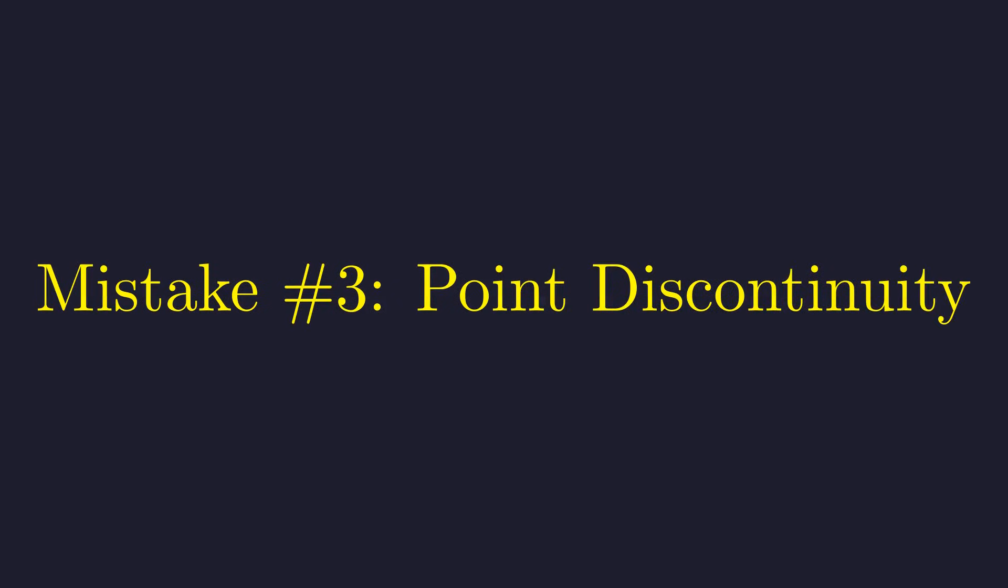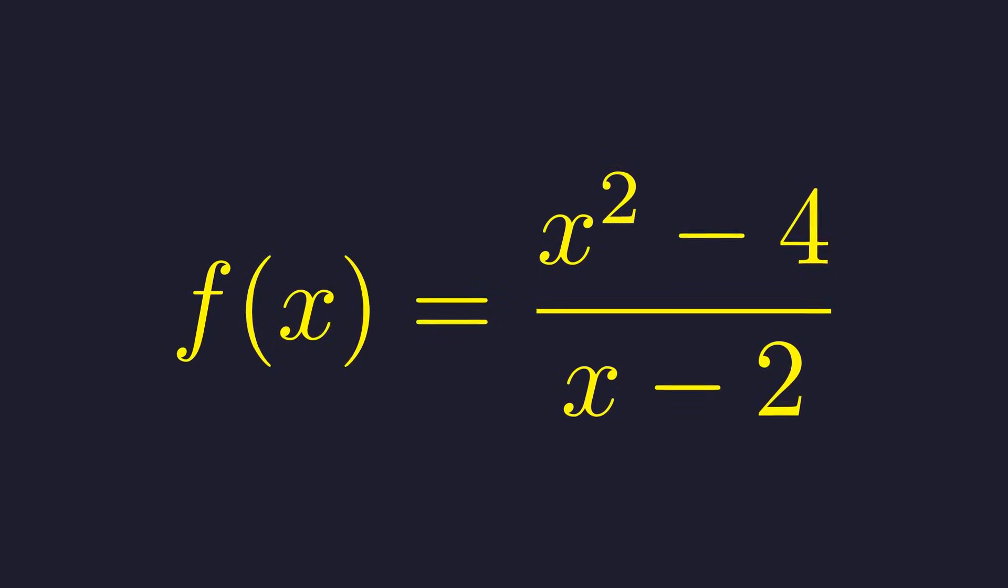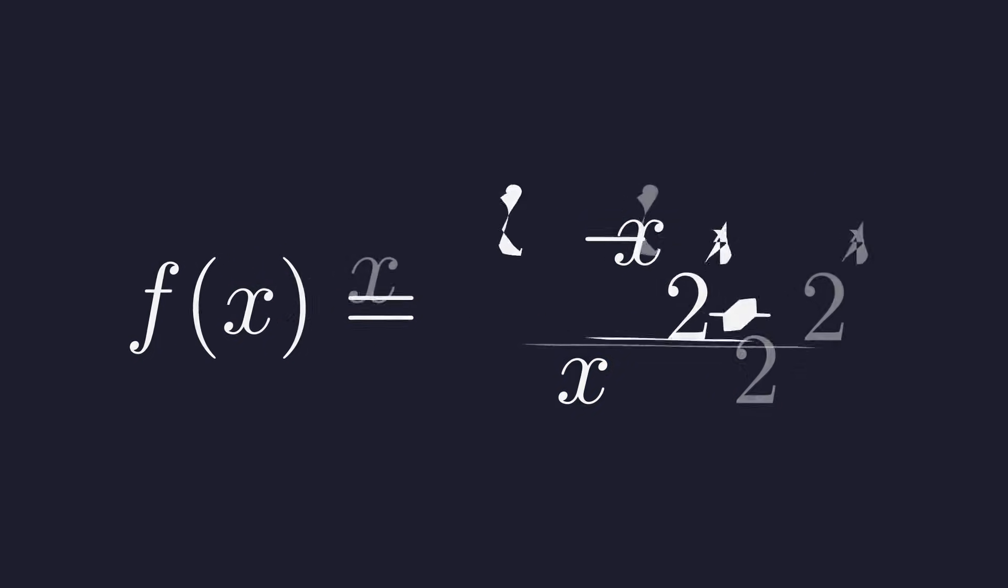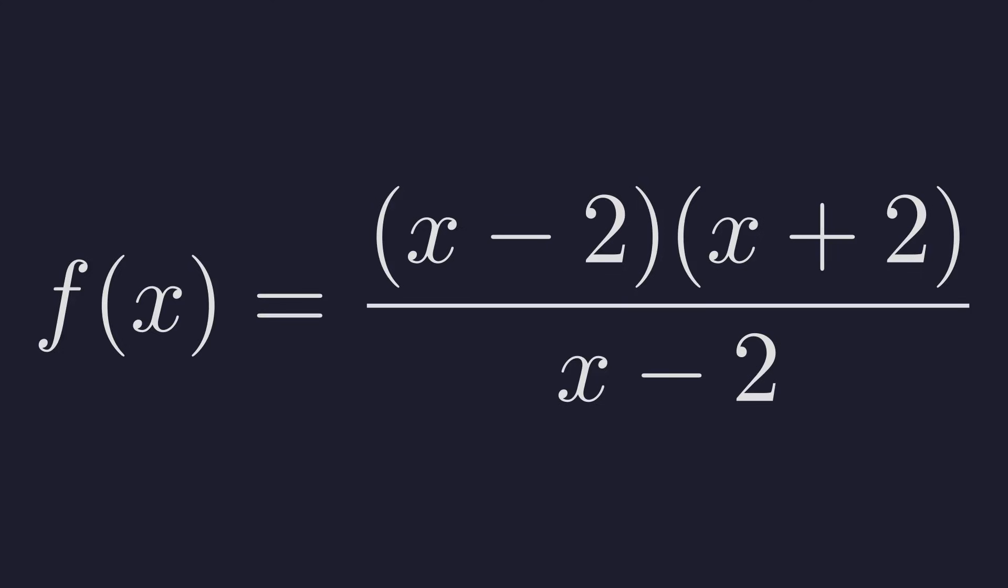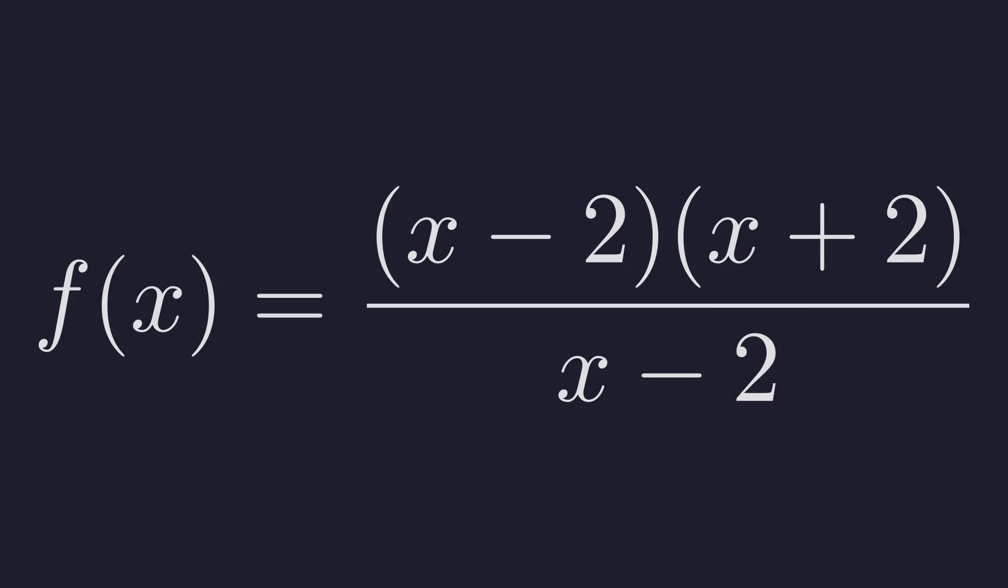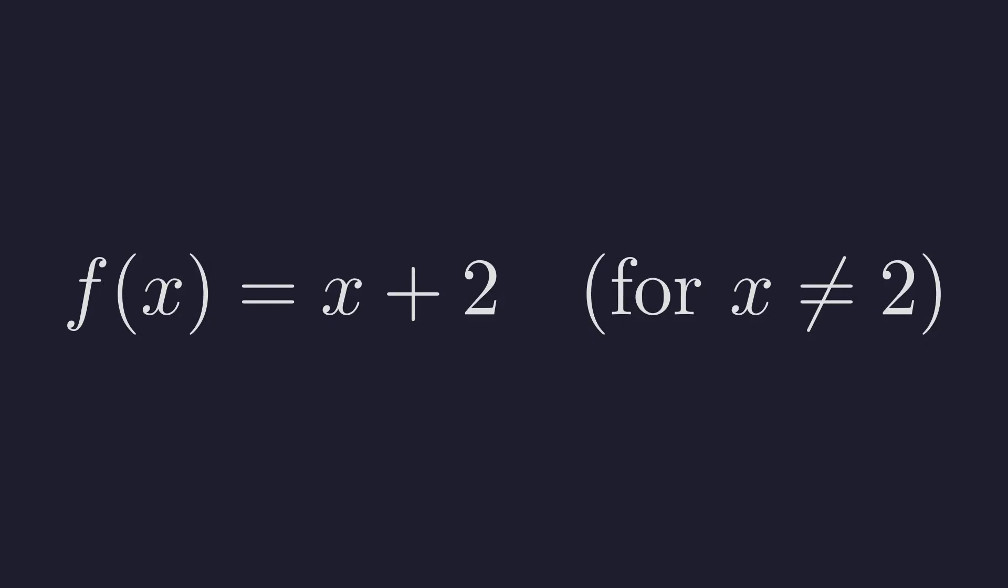Algebra can sometimes mask hidden problems. Let's look at a function that appears simpler than it is. Consider the function f of x equals x squared minus four all divided by x minus two. We can factor the numerator as a difference of squares. This gives us x minus two times x plus two in the numerator. It seems like we can just cancel the x minus two terms. This simplifies the function to x plus two, but this is only true for x not equal to two, so it's not quite a straight line.